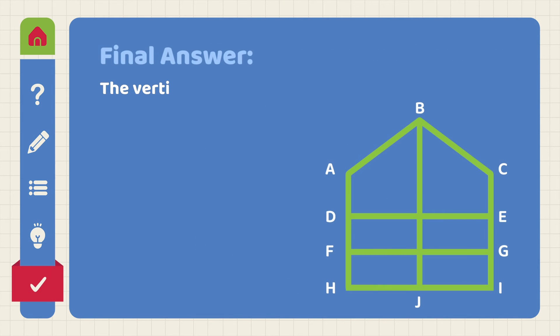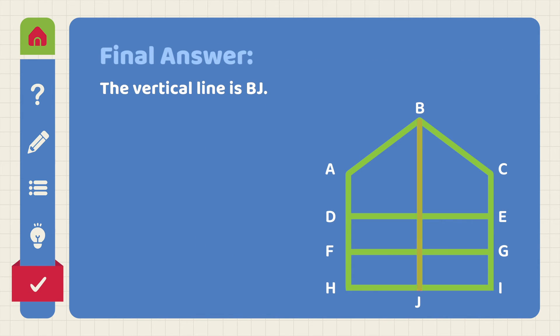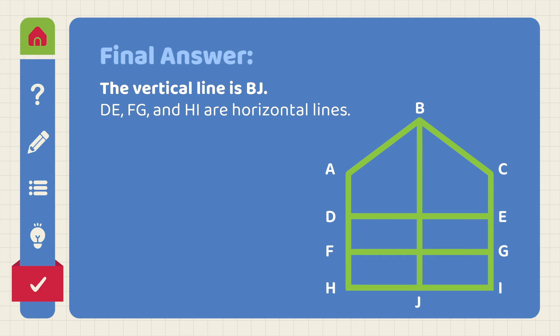The vertical line is BJ. DE, FG, and HI are horizontal lines.